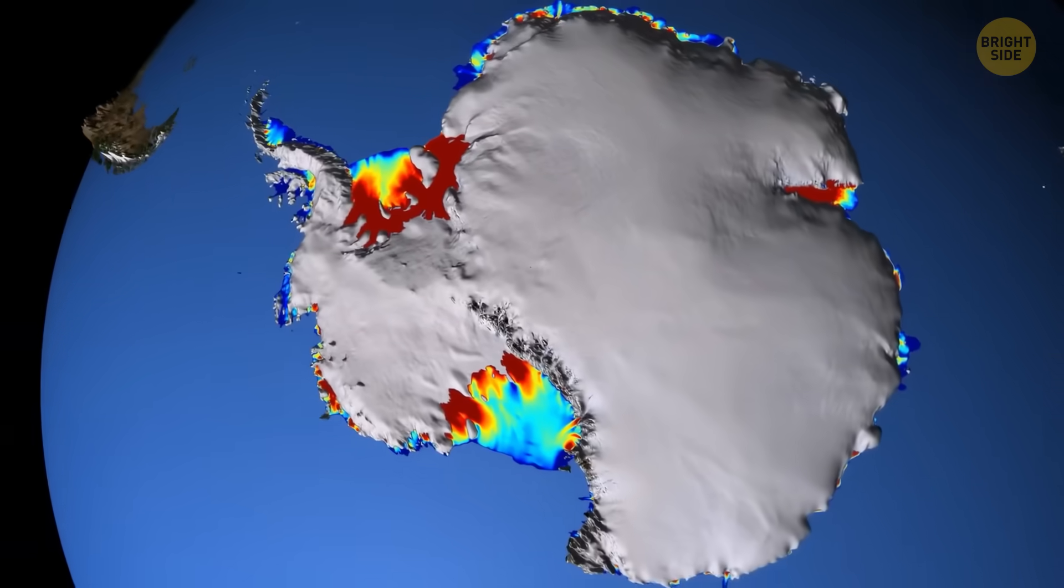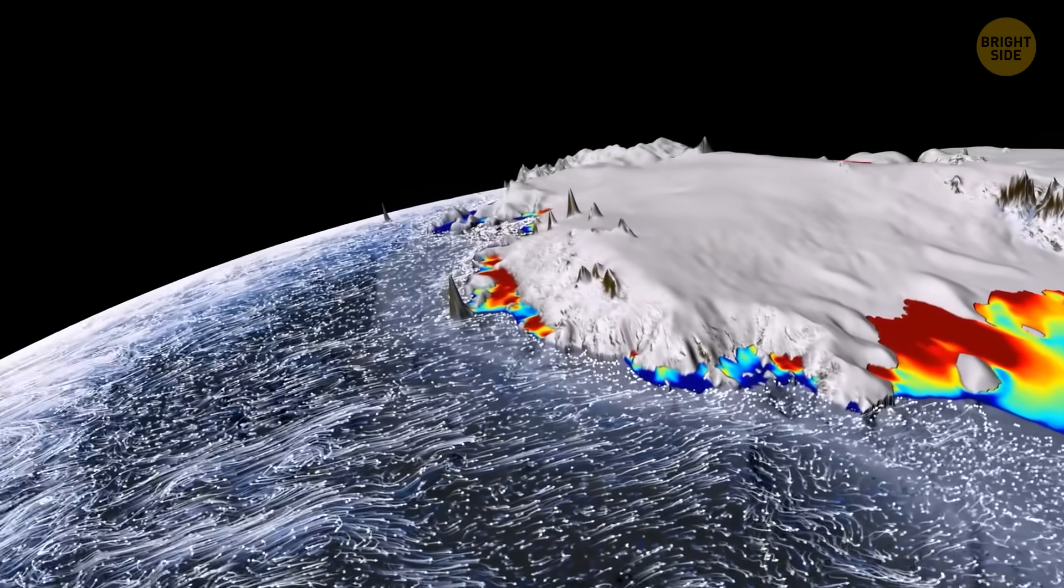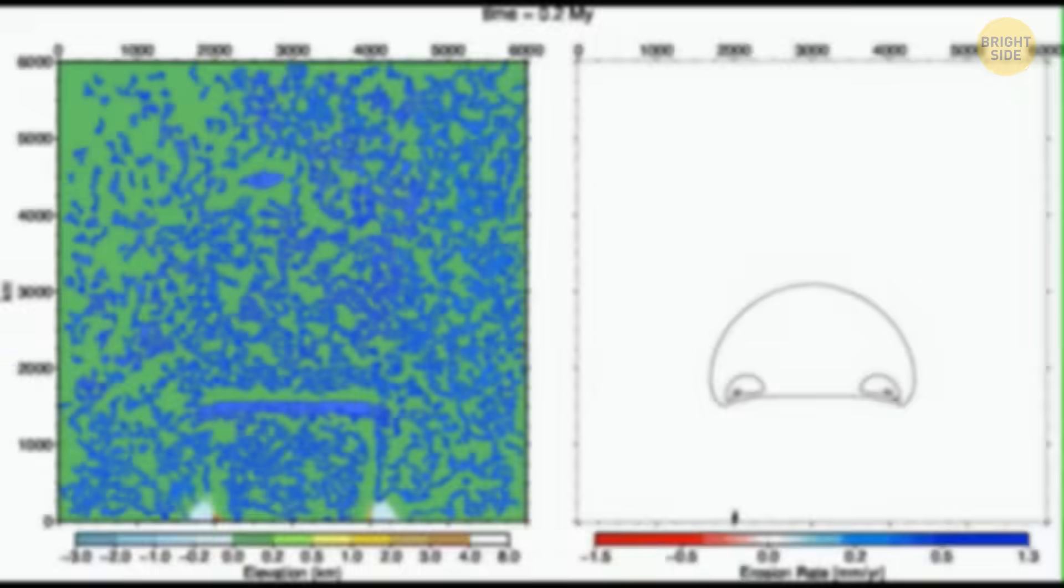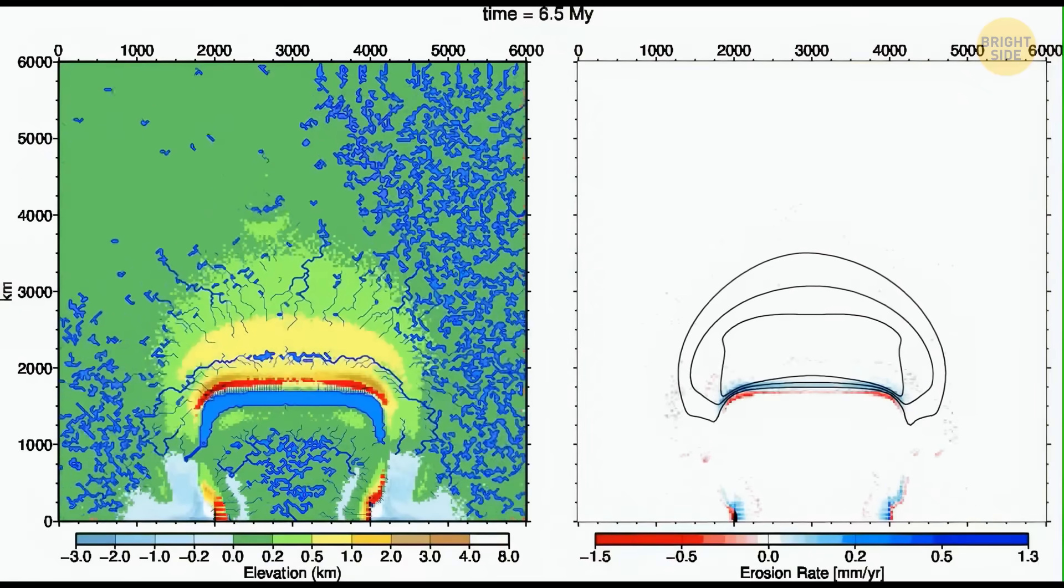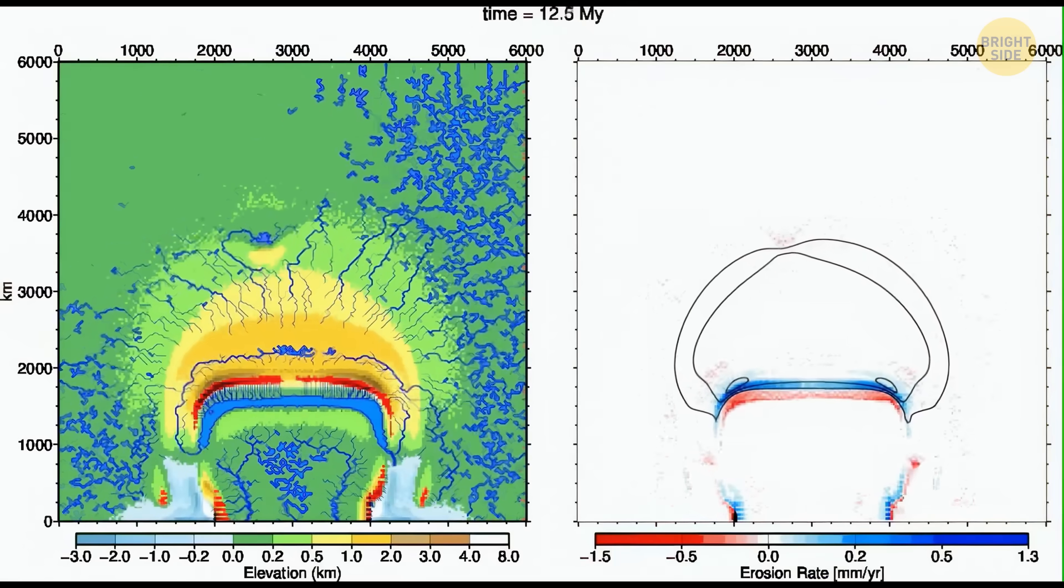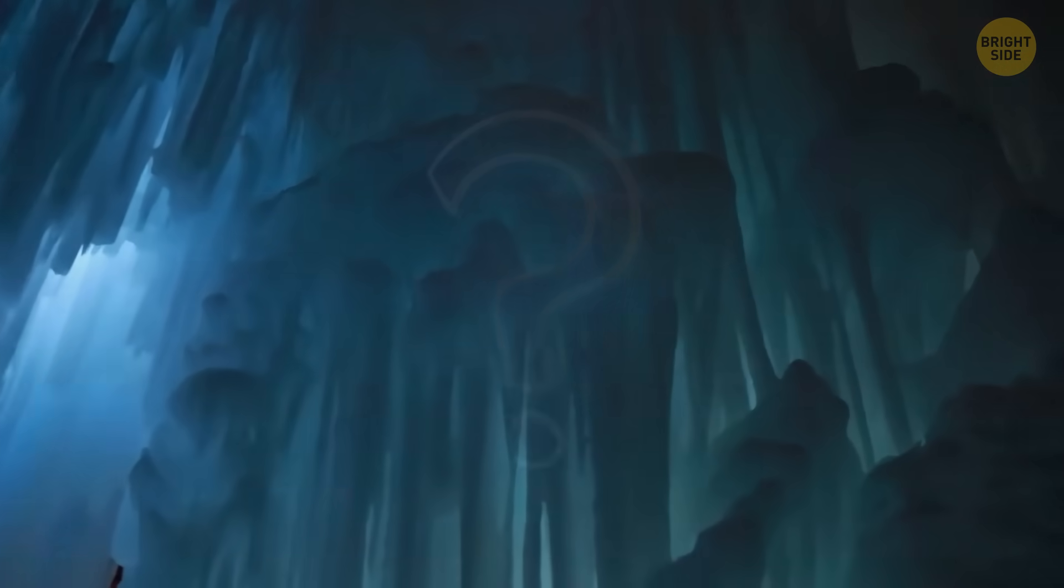Those mountains were first discovered in 1958 using seismological instruments. More than half a century has passed since then, and this place still remains one of the most poorly studied tectonic objects on Earth. Why? Because it's ice. A lot of ice.